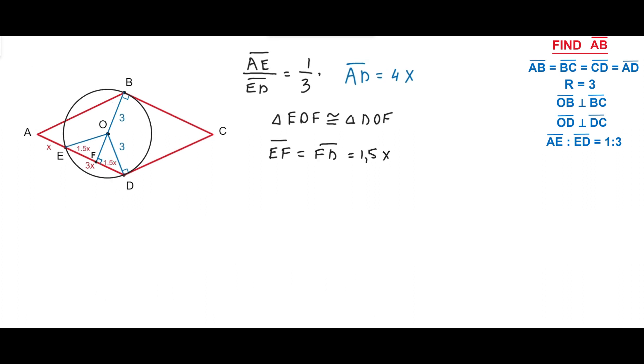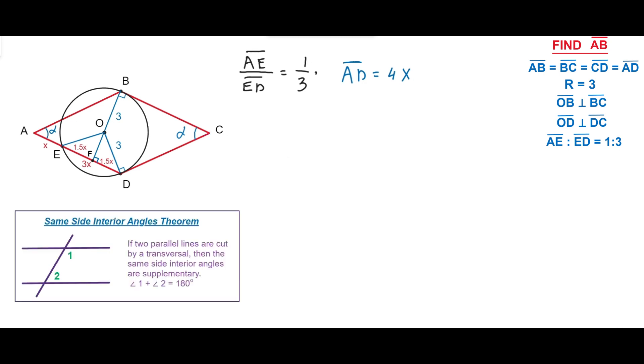Next, let alpha denote the acute angles of the rhombus BAD and BCD. Notice the angles BCD and ADC are same side interior angles. According to the same side interior angles theorem, the angles BCD and ADC are supplementary angles which means the sum of these two angles equals 180 degrees.